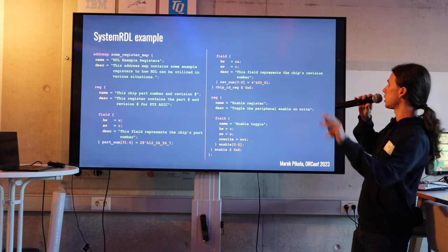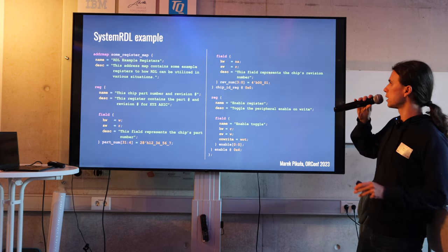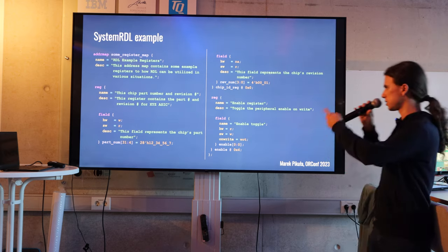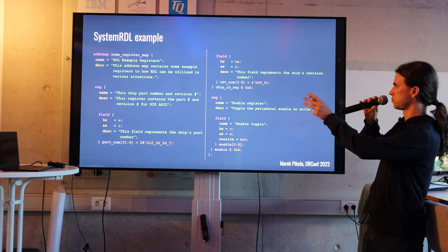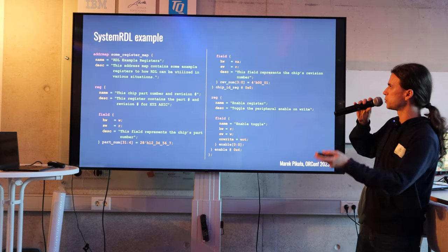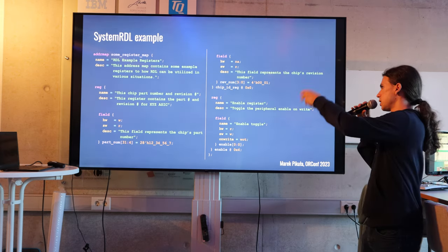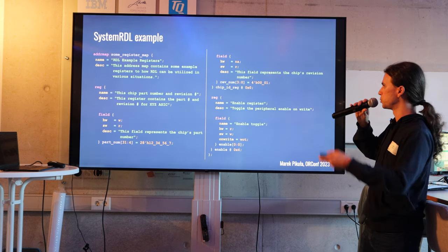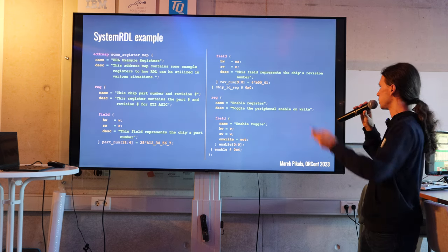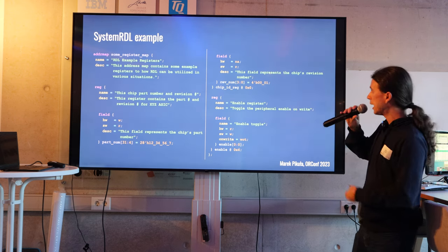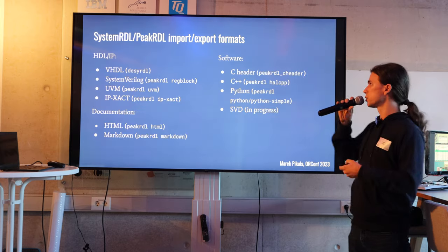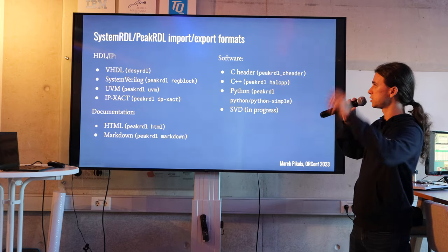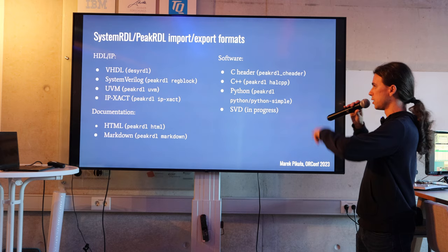Here is a SystemRDL example. It's more or less an address map with some description, then we have register description fields, and so on. From that, we can generate multiple things: VHDL, SystemVerilog, UVM, IP-XACT.